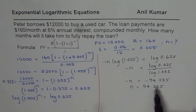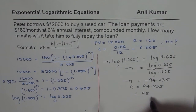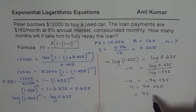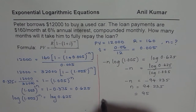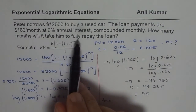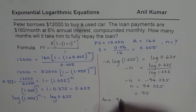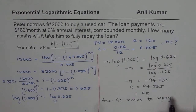So minus N equals minus 94.235, meaning N equals 94.235. That means after the 94th month some amount is still left, so we have to pay a total of 95 installments. Of course, in the last installment the total amount will not be $160 — it will be lesser, which is always adjusted. Therefore, our answer is: it will take him 95 months to fully repay. The amount paid in the last month will be much lesser than $160.